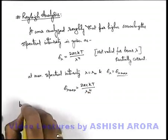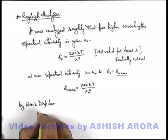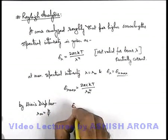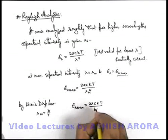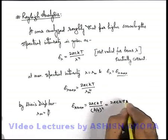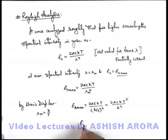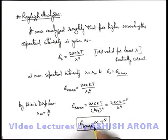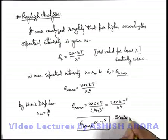And as we already studied by Wien's displacement law, lambda m is b upon T. This will give us e lambda max is equal to two pi c k T divided by b upon T to power four. So this will be two pi c k T to power five upon b to power four. So here we can write in the black body radiation spectrum, the peak spectral intensity emitted from the black body will be directly proportional to T to power five. This is another important relation for black body radiation spectrum. And this is Wien's fifth power law.